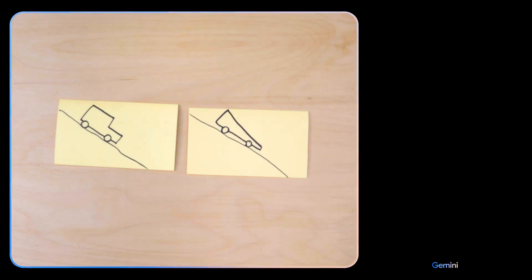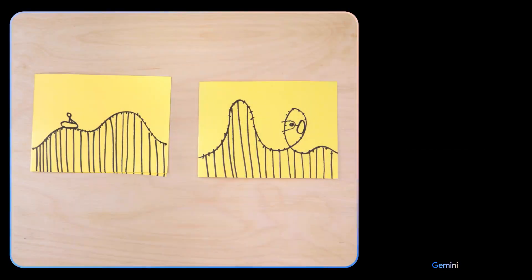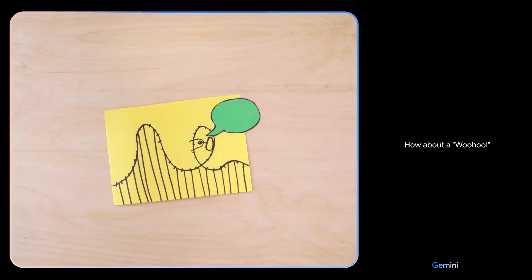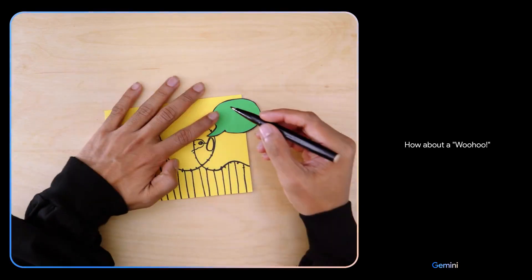Based on their design, which of these would go faster? The car on the right would be faster. It is more aerodynamic. Which looks more fun. The one on the right, because it has a loop. What do you think this person might be saying? How about a, woohoo? Oh, I love that.